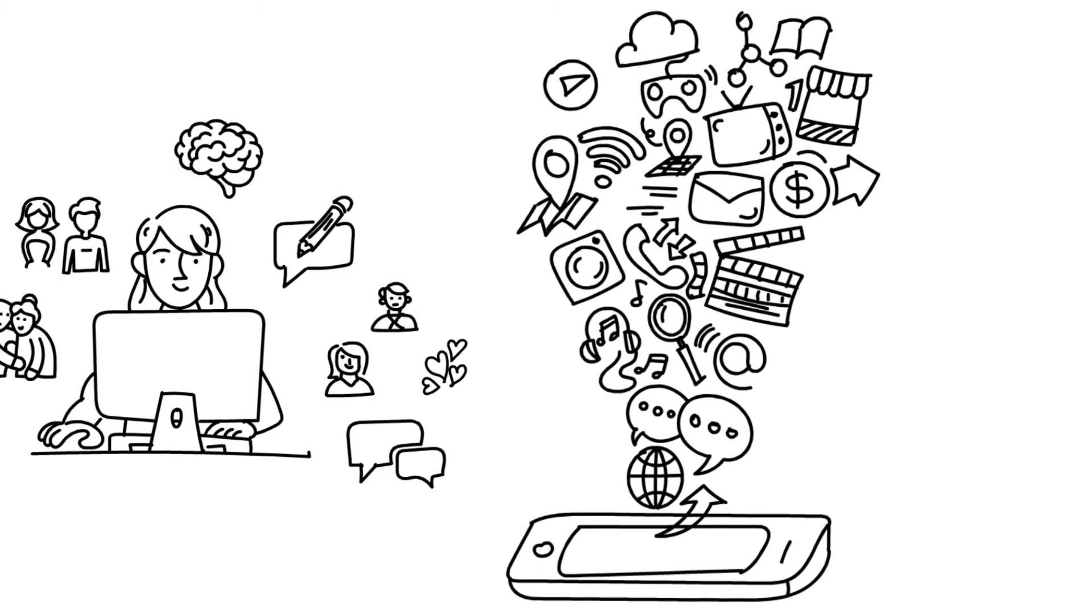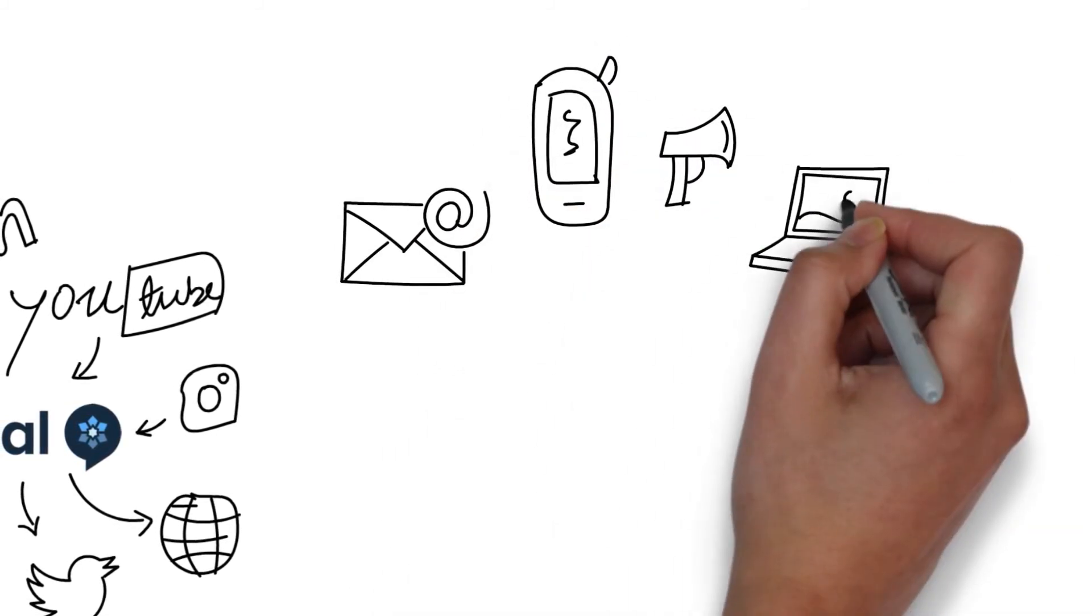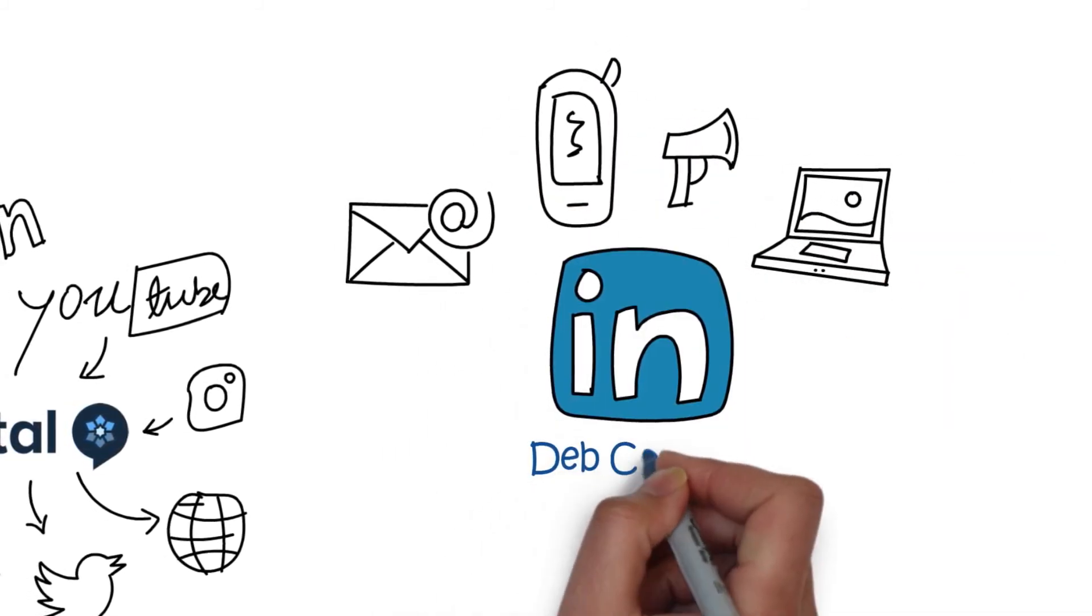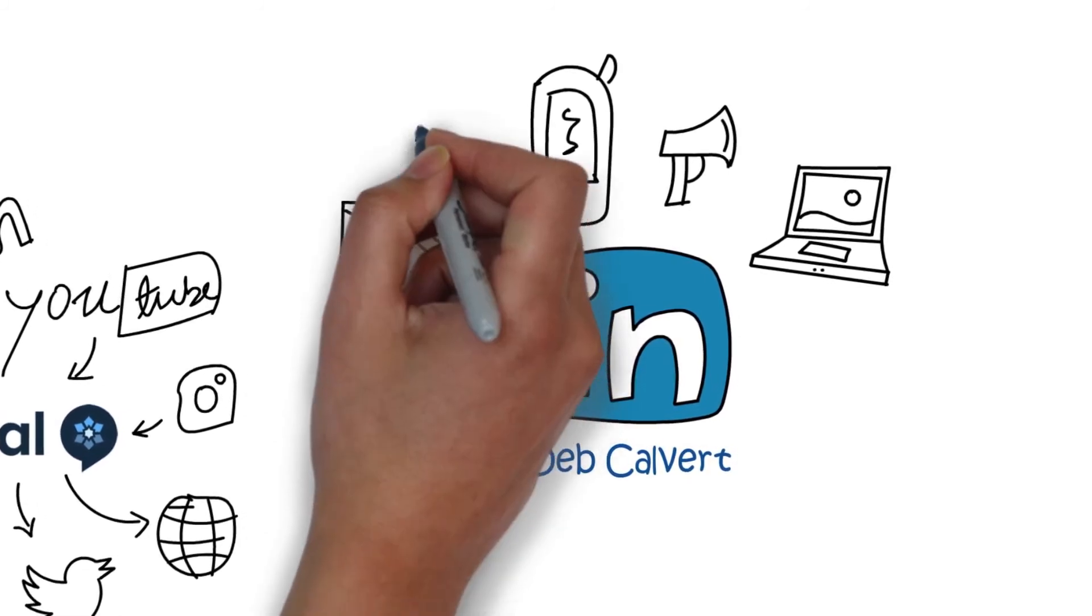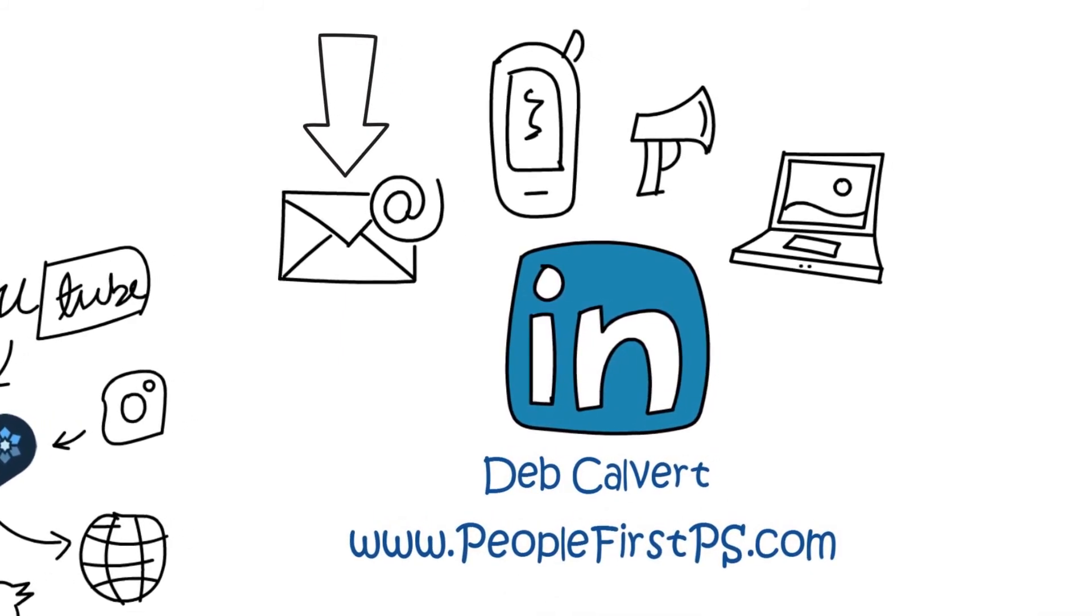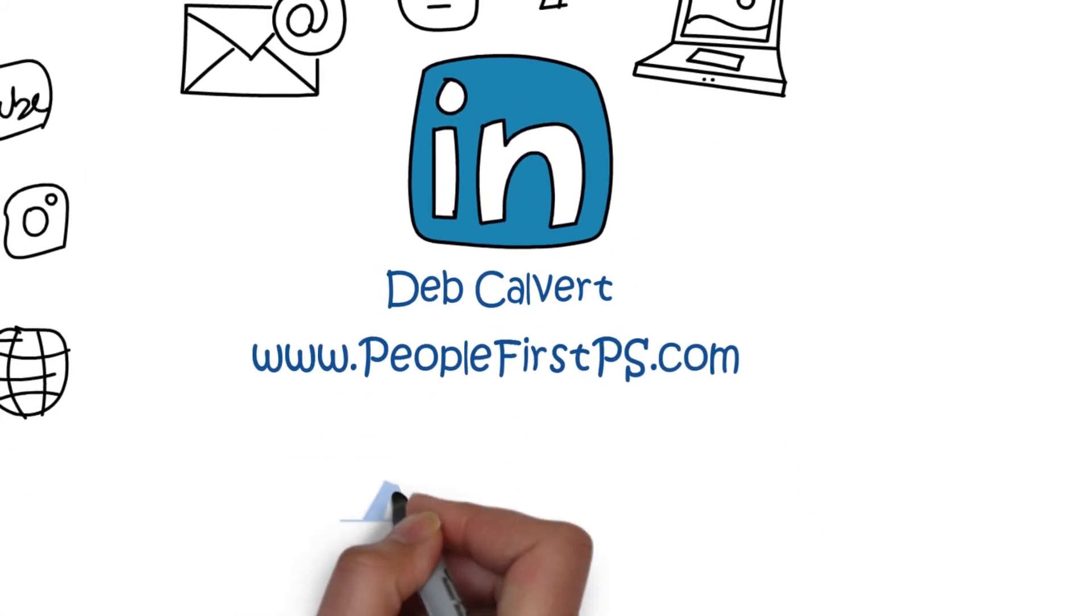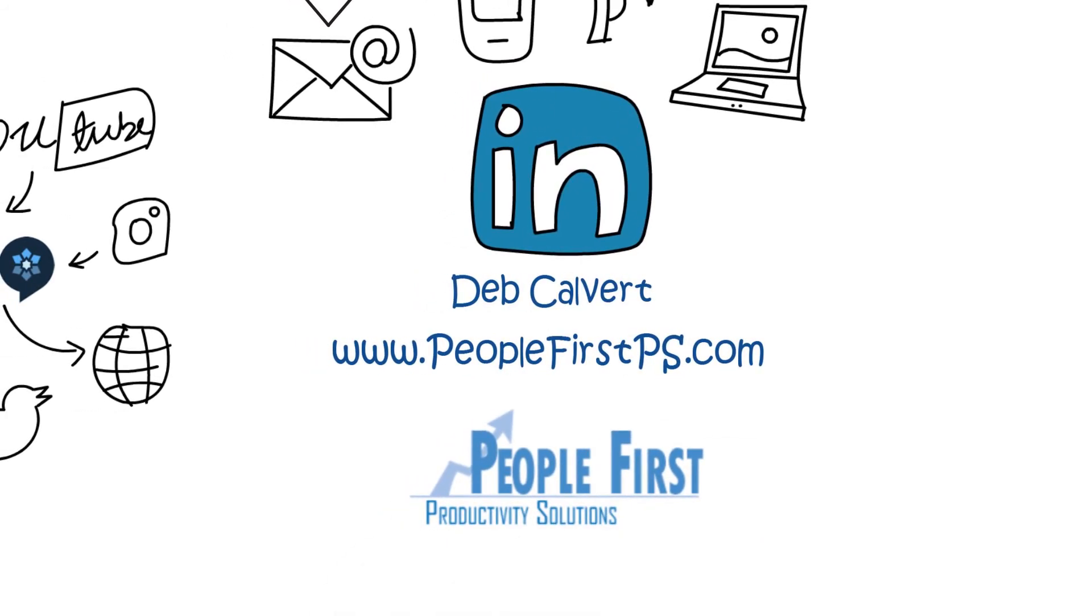Well then lastly how can people get in touch with you if they want to learn more about Stop Selling and Start Leading or just some of the ideas that we've talked about? Well, LinkedIn's a great place to start or you can certainly email me. The website for my company is People First PS. The words people and first are spelled out, PS stands for Productivity Solutions. People First PS. Come on over there, join our community. We give a lot of stuff away so it's high value, it's not going to be junk mail. Okay that's good to know. Well thank you so much Deb, I really appreciate it. Well my pleasure, thank you so much Sonia for having me speak with your group.